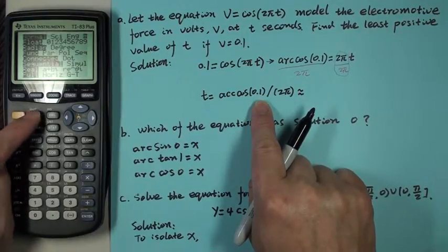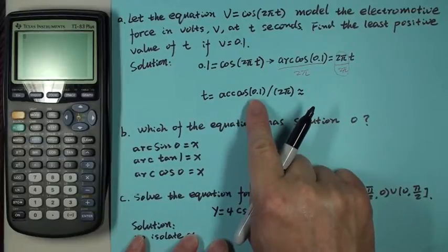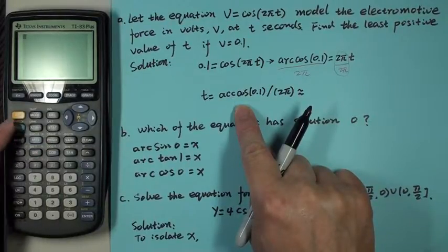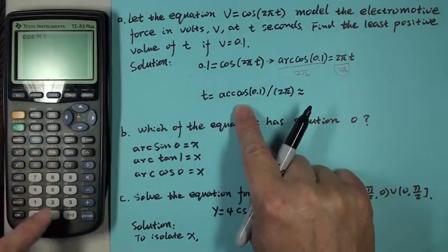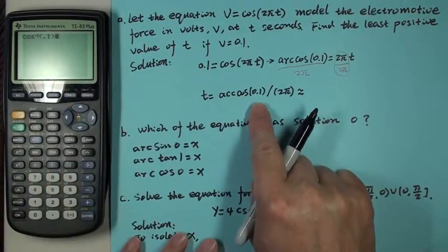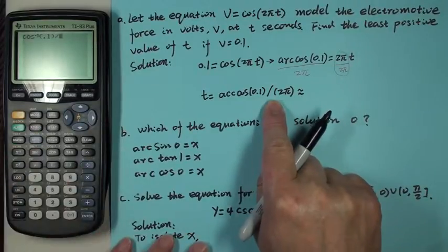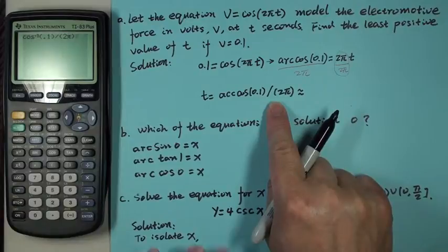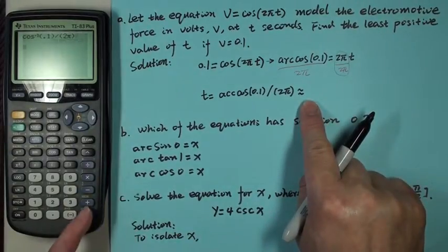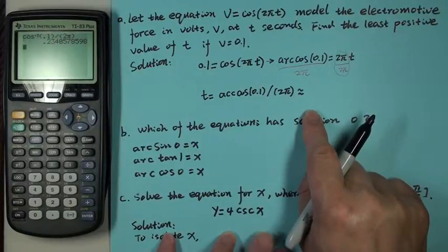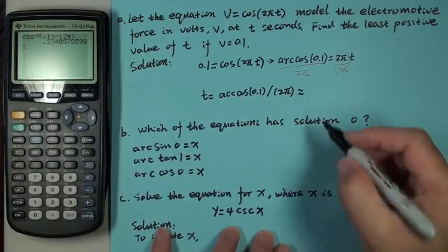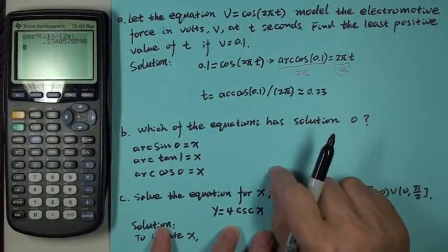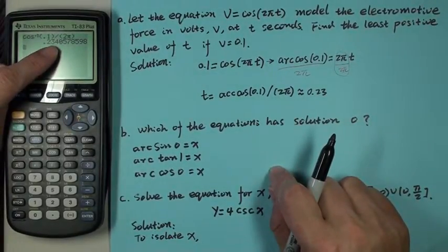Arc cosine on the TI-83 calculator is the yellow function cosine inverse, so you do second, cosine, point one, close parentheses, and then divided by parentheses two, second, pi, close parentheses. You then hit enter and you have the answer. Roughly 0.23 seconds.